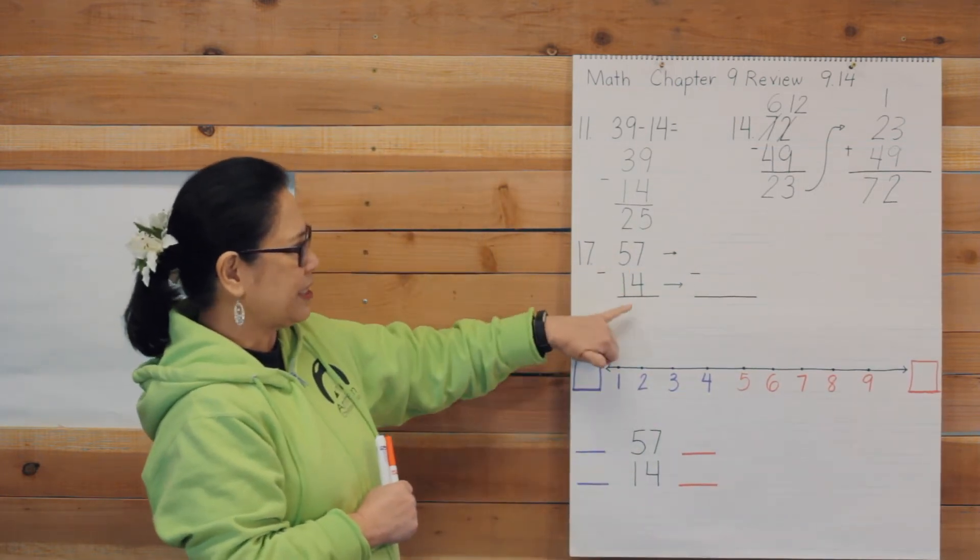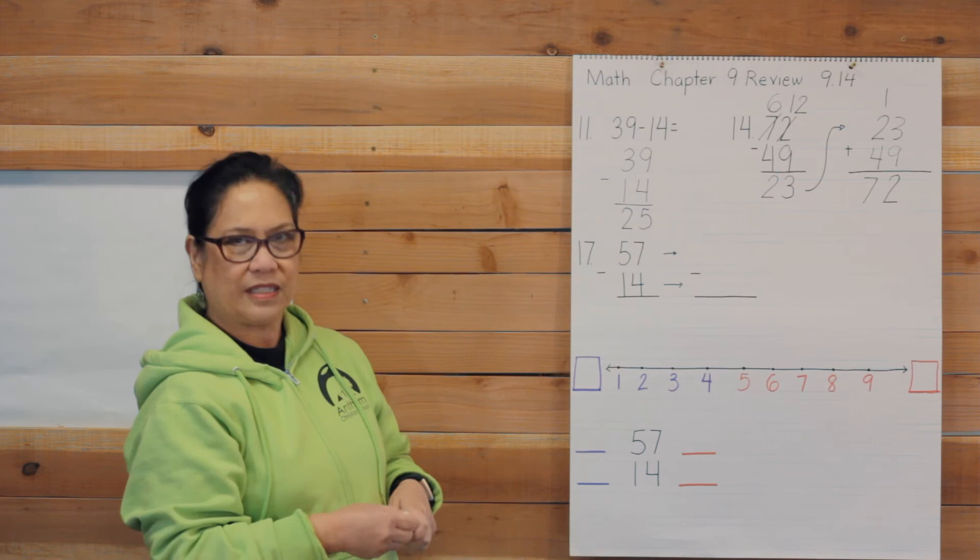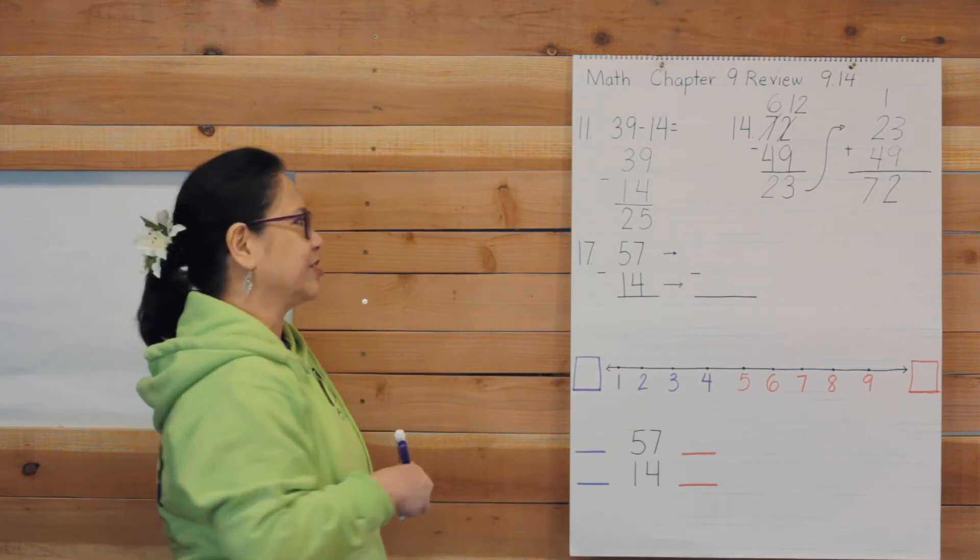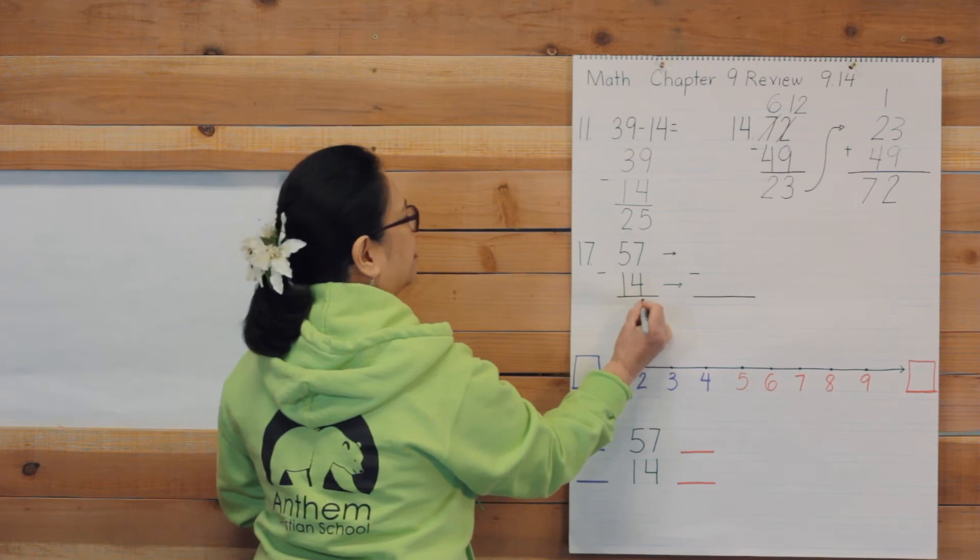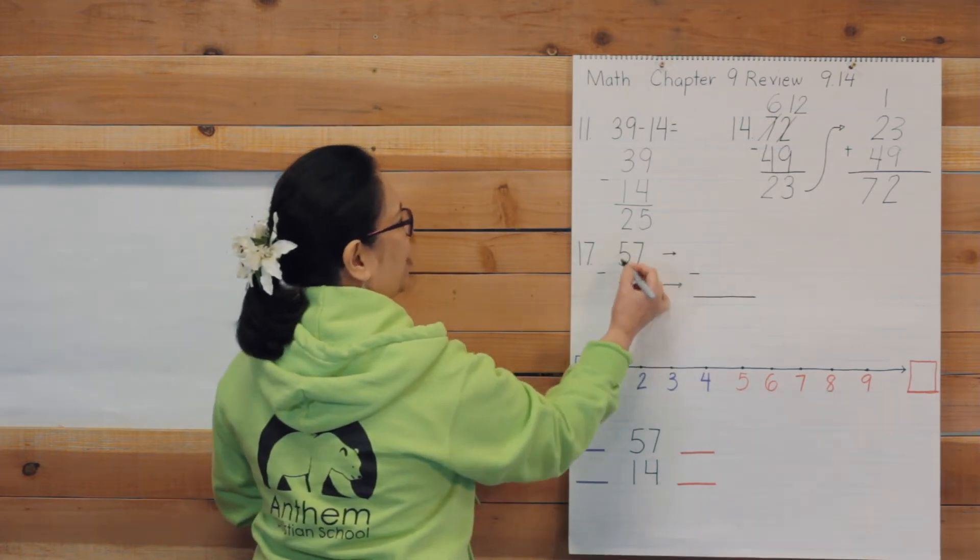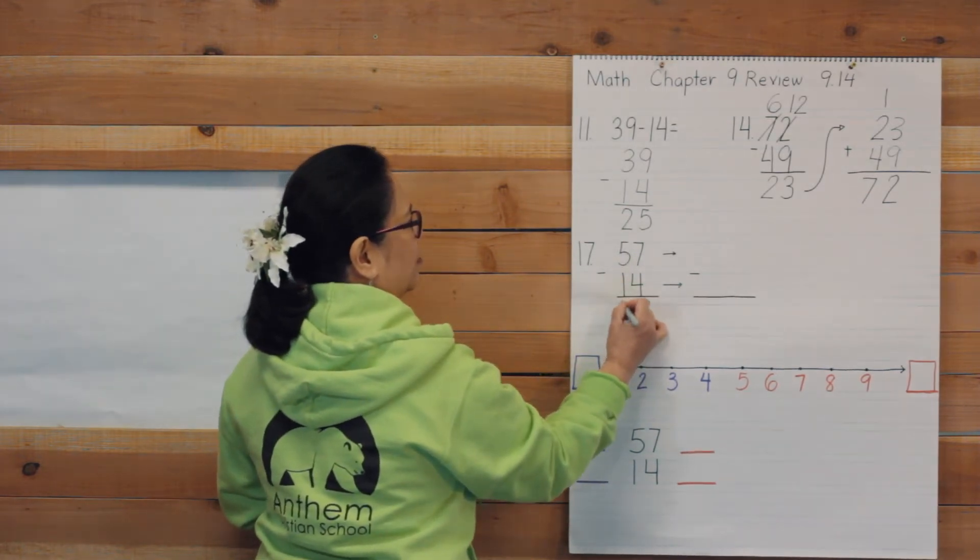All right. Your first problem is 57 take away 14. Let's solve that first. 7 take away 4 is 3. 5 take away 1 is 4.